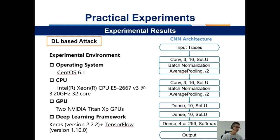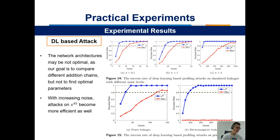We present the experimental environment and the CNN architecture. The network architecture may not be optimal, as our goal is to compare different addition chains rather than find optimal parameters. It can be seen that with increasing noise, the attack on x^85 becomes more efficient as well.